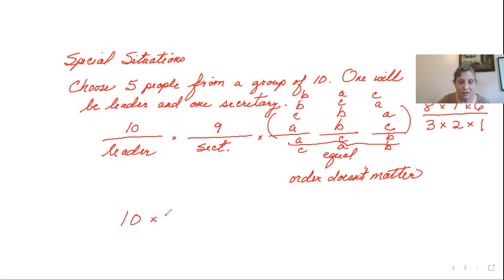So we end up with 10 times nine times eight times seven times six divided by the three times two times one. The one's not going to do anything. The three times two cancels out the six. So we actually end up with 5,040, which was exactly the same number as the previous problem where we couldn't have repeat digits.